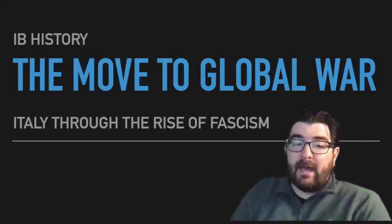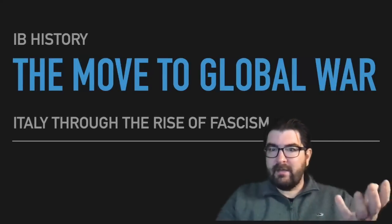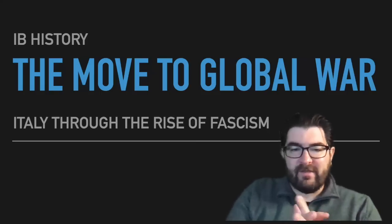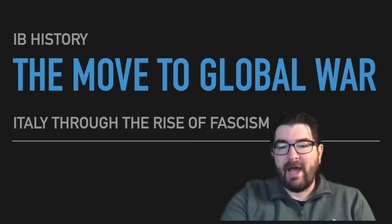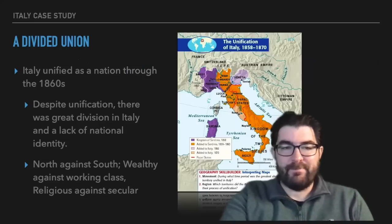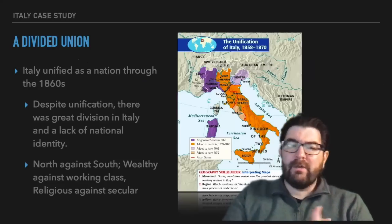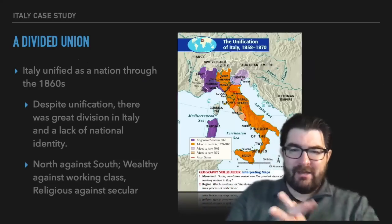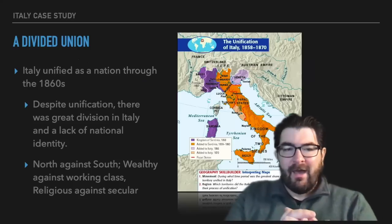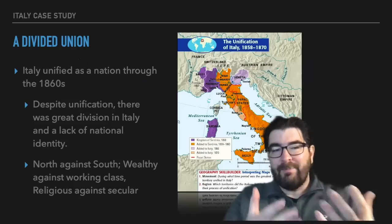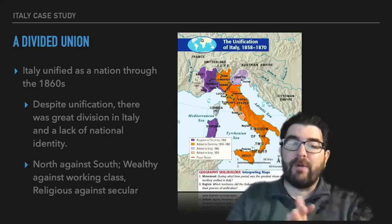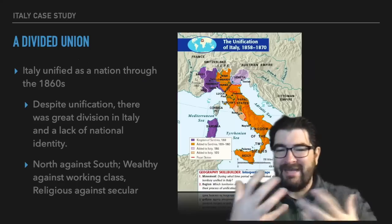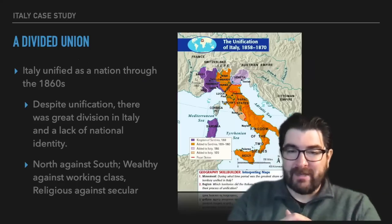Today we're going to begin our case study on Italy and Germany in the Second World War, starting with the Italian state through its rise of fascism in the 1920s. We're going to begin with talking about Italy just becoming a brand new nation in the 1860s. It's a unified nation, but despite this unification, there's still great division within the Italian state and not much of a national identity at this early point.